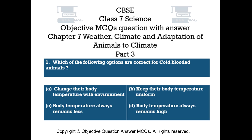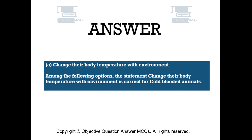Question number 1. Which of the following options are correct for cold-blooded animals? Option A: Change their body temperature with environment. Option B: Keep their body temperature uniform. Option C: Body temperature always remains less. Option D: Body temperature always remains high. The right answer is Option A — change their body temperature with environment. This statement is correct for cold-blooded animals.